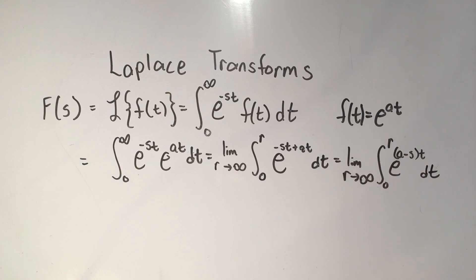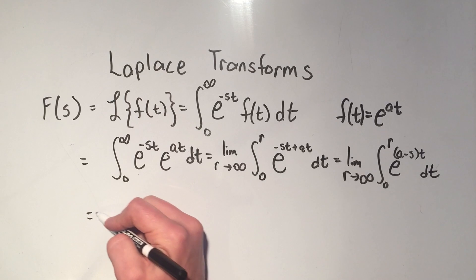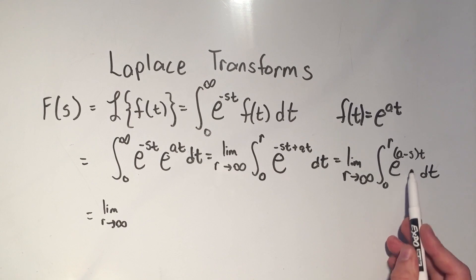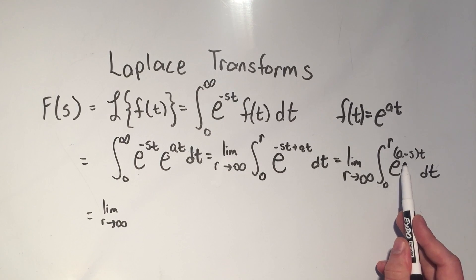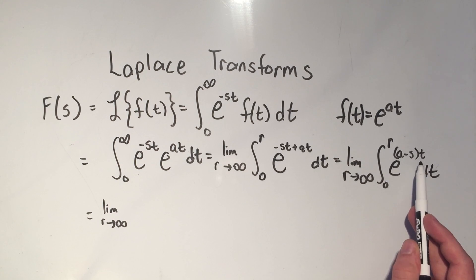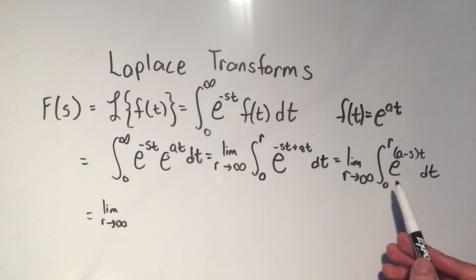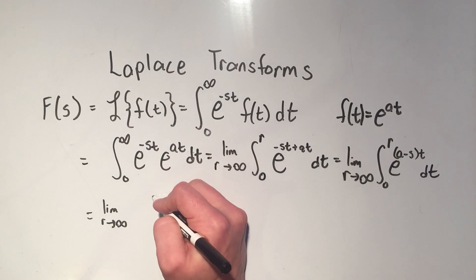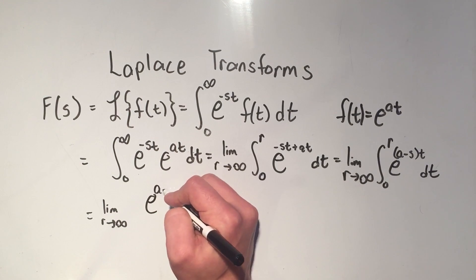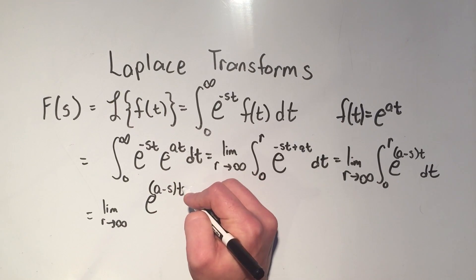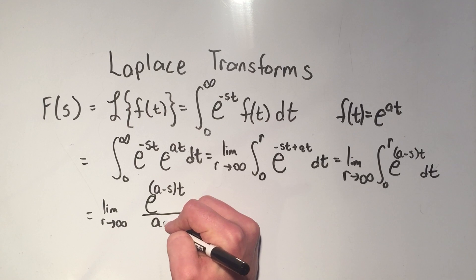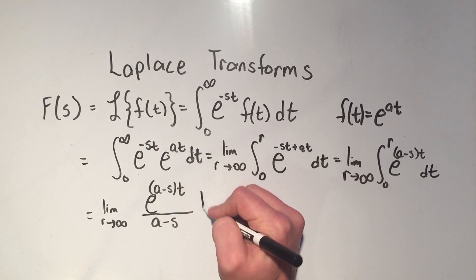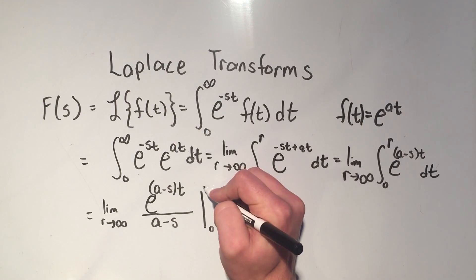Now, I just have to do this antiderivative. So what's the antiderivative of e to the t? It's e to the t. What's the antiderivative of e to the 2t? It's e to the 2t divided by 2. What's the antiderivative of e to the 5t? It's e to the 5t divided by 5. So I'm dividing by the derivative of the exponent. So I need to divide by a minus s. And now I evaluate from 0 to r.